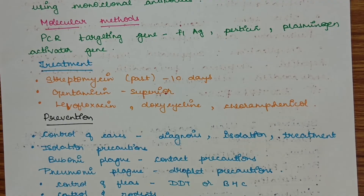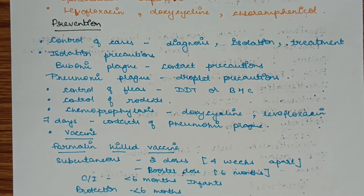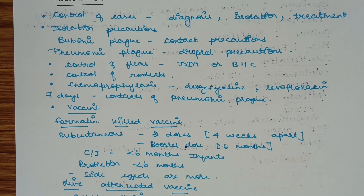Treatment of plague: streptomycin was used in the past for 10 days but now gentamicin is considered superior. Other drugs include levofloxacin, doxycycline, and chloramphenicol. Prevention includes controlling cases with appropriate diagnosis, isolation, and treatment. For bubonic plague, contact precautions are needed; for pneumonic plague, droplet precautions are required. Flea and rodent control is important — fleas can be controlled by DDT or BHC, and rodents should also be controlled. Chemoprophylaxis with doxycycline or levofloxacin for 7 days should be given to contacts of pneumonic plague.